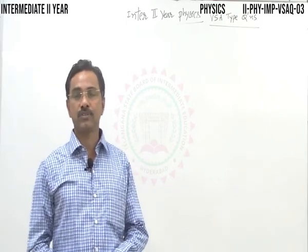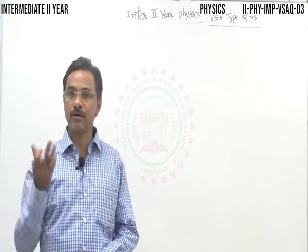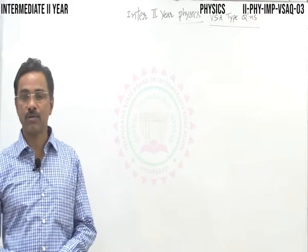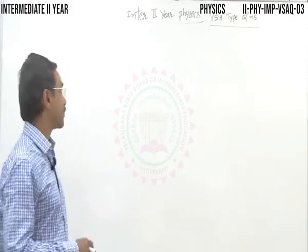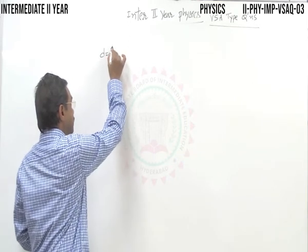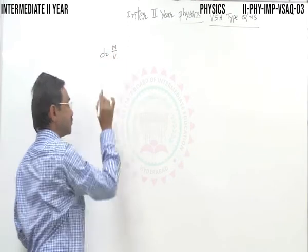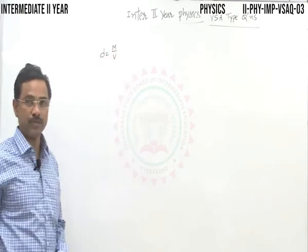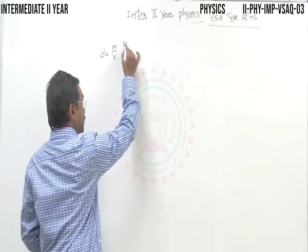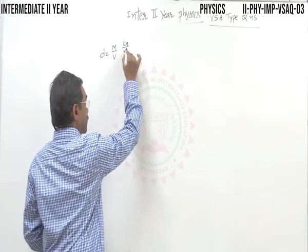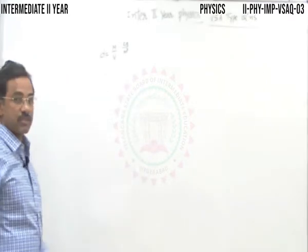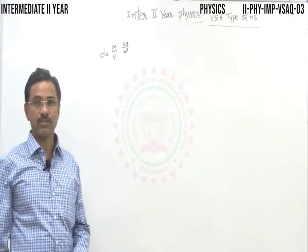Mass density is mass per unit volume. Its units in the SI system are kg per cubic meter.